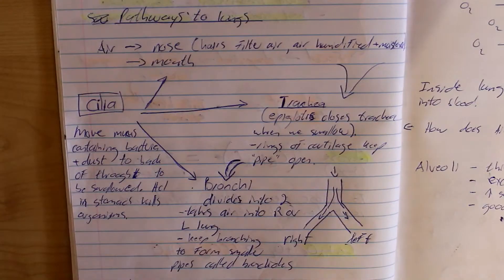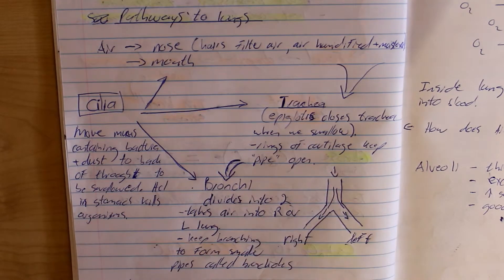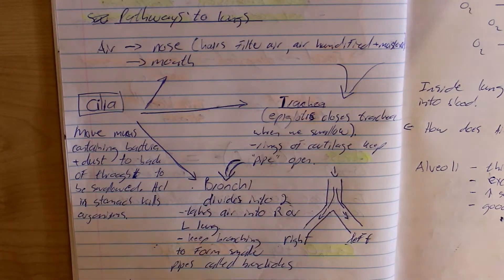So, gaseous exchange in humans. We get our glucose through our diet. Plants, however, get their glucose from photosynthesis — they actually produce their own glucose. Inside the lungs, the alveoli allow oxygen to go into the bloodstream. Let's take a look at how oxygen actually enters from our environment into our lungs — how air travels from our surroundings to our lungs to the alveoli.